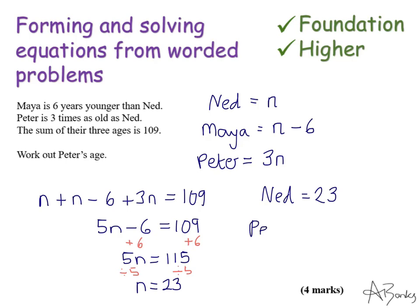Now, Peter is three times as old as Ned. And we put three n. So I just need to do three times 23, which is 69. So that's how old Peter is.